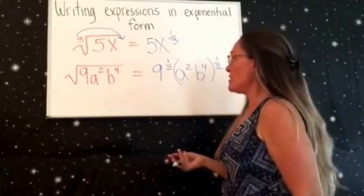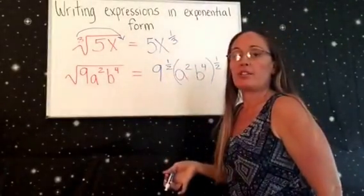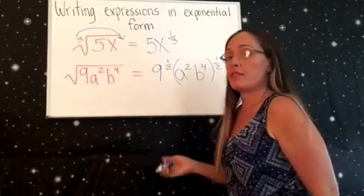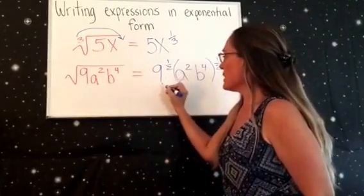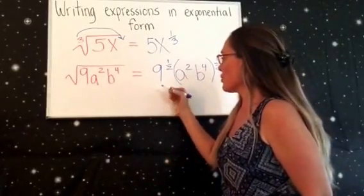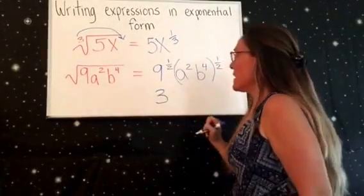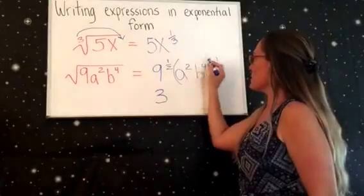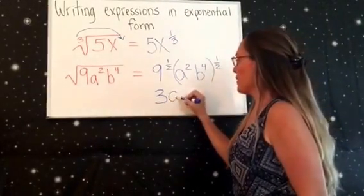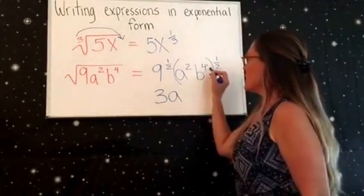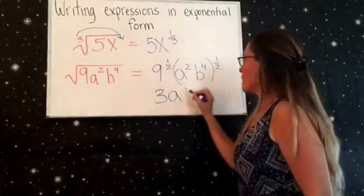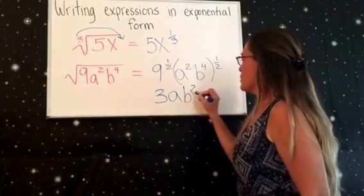Which I want you to look at as just simplifying it to the number times itself that equals 9. So really this is just going to be 3. And then when you have a squared and you times that by one-half, you're just going to be left with a. And then b to the 4th times one-half is just b squared.